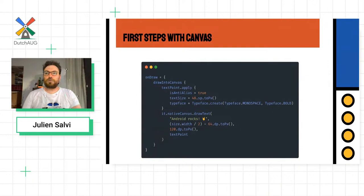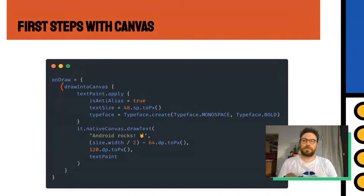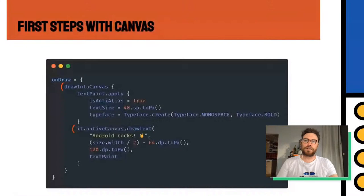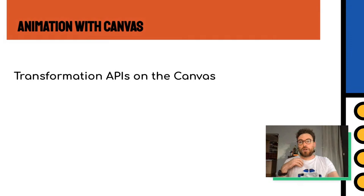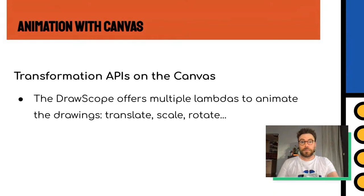Under our draw method, we can call the drawIntoCanvas lambda which gives direct access to the Jetpack Compose canvas. After defining paint methods for the native canvas, inside the canvas we can access the native Android canvas and call all its methods — for example drawText on a bitmap. Now we've seen how to draw stuff on the canvas. Let's see how we can animate them, looking at the transformation APIs on the canvas.